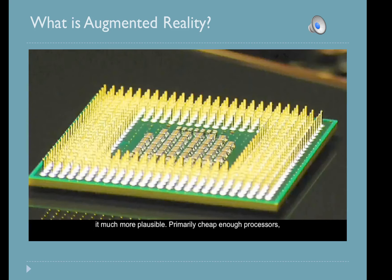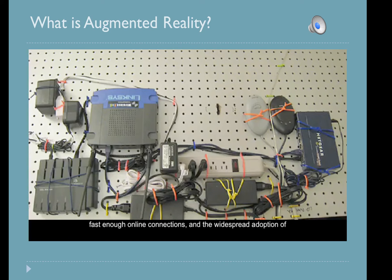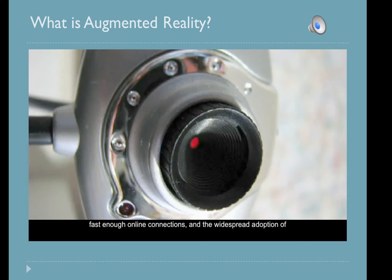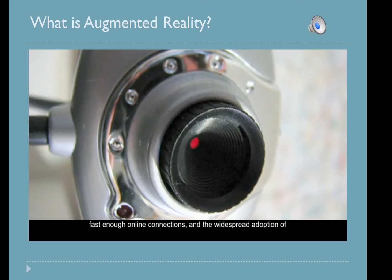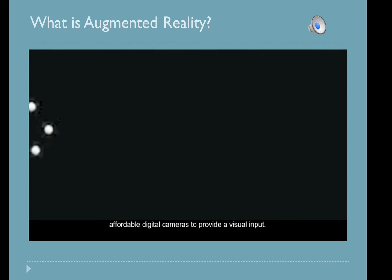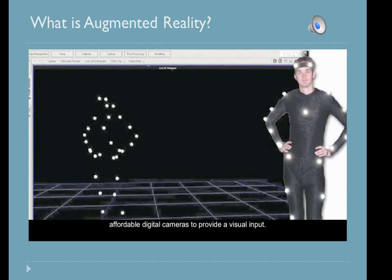Primarily, cheap enough processors, fast enough online connections, and the widespread adoption of affordable digital cameras to provide a visual input are the advances making augmented reality feasible.